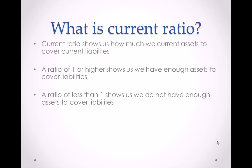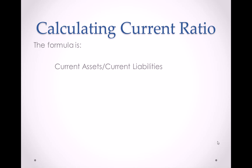Now that we know a little bit more about what current ratio is, let's look at how to calculate it. It's a very simple ratio: you take your current assets and divide them by your current liabilities.